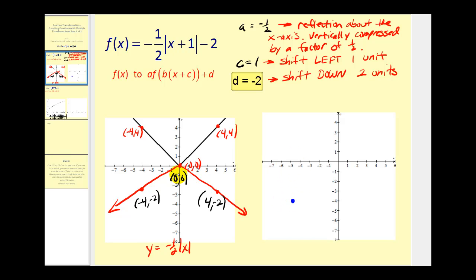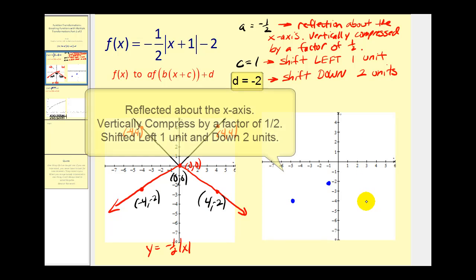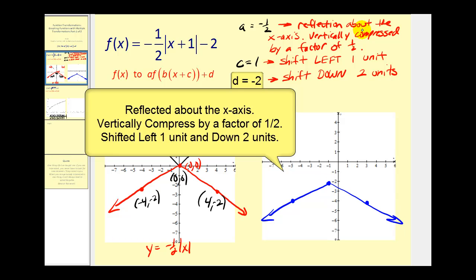Subtract one from the x-coordinate of (0, 0) gives -1; subtract two from the y-coordinate gives -2, so the point (-1, -2). Then subtract one from x gives 3, subtract two from y gives -4, so the point (3, -4). This is the graph of the original function — it's been reflected, vertically compressed, shifted left one unit, and down two units.